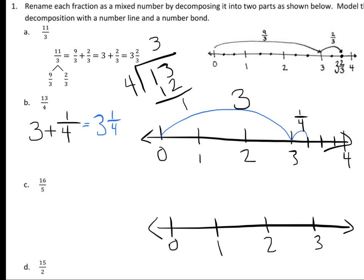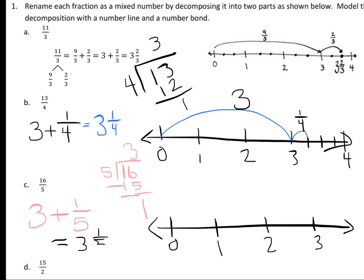Let's try that again on C: 16 divided by 5. 5 goes into 16 three times, making 15. So my answer is 3, plus — how much is left over? If you subtract, you get 1 left over. Remember, that 1 is out of 5ths; there's 1 of the 5ths left over, for a total of 3 and a 5th. On your number line, hop 3, mark 5ths, and hop an extra 5th.